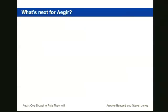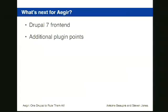What's next for Eiger: the primary goal is a Drupal 7 front end. Currently Eiger supports hosting and managing Drupal 7 sites, but the front end itself is still in Drupal 6. The plan is to move to Drupal 7 and take advantage of its features. They also want to add additional extension points so developers can plug in and extend Eiger more easily. Support for WordPress or other CMSes is welcome via patches, and if someone posts a patch it will be reviewed.